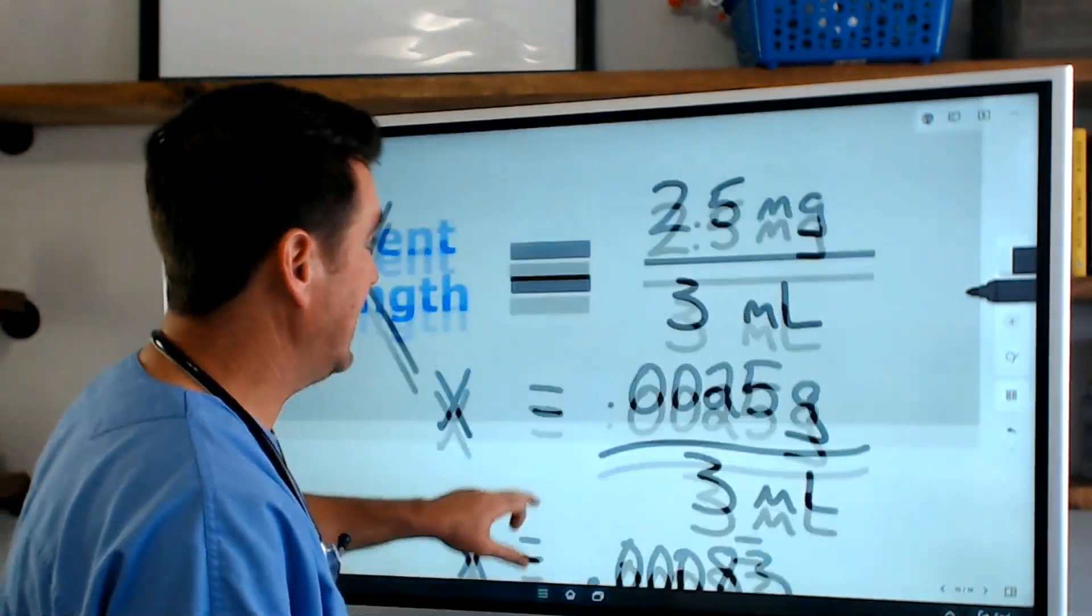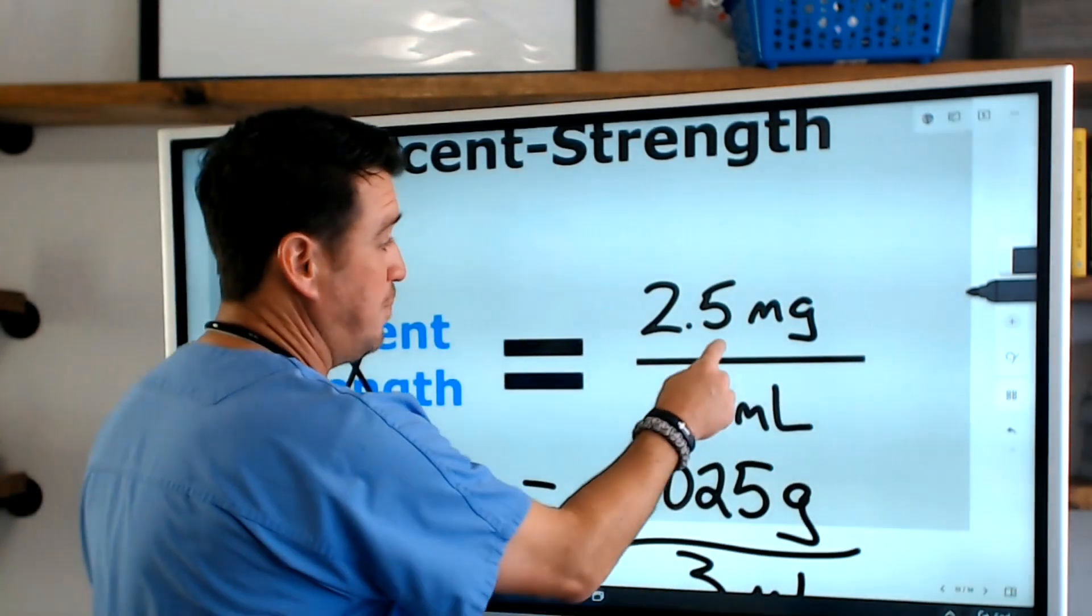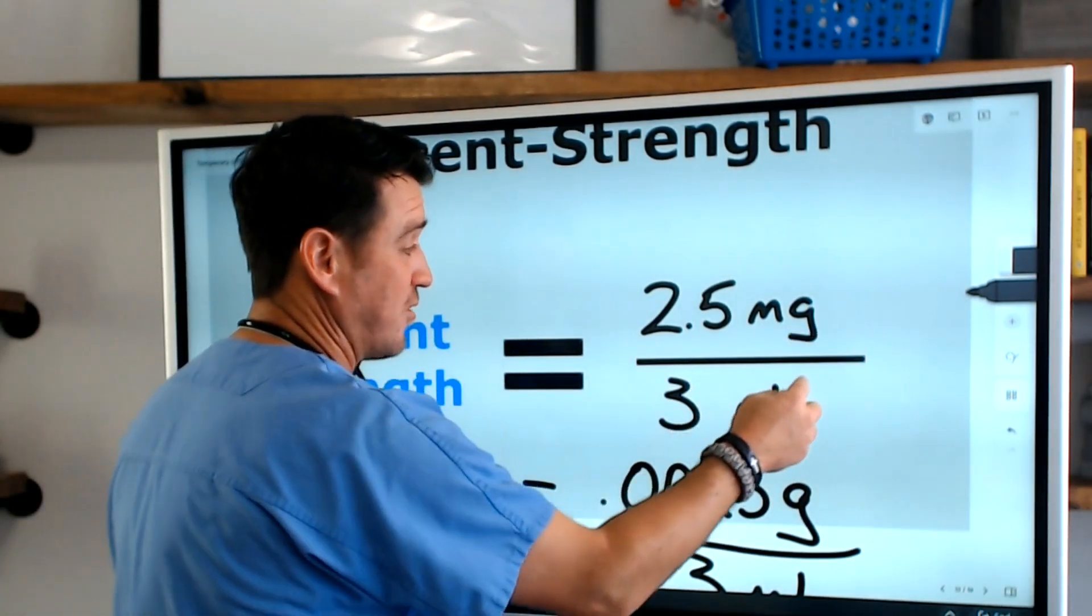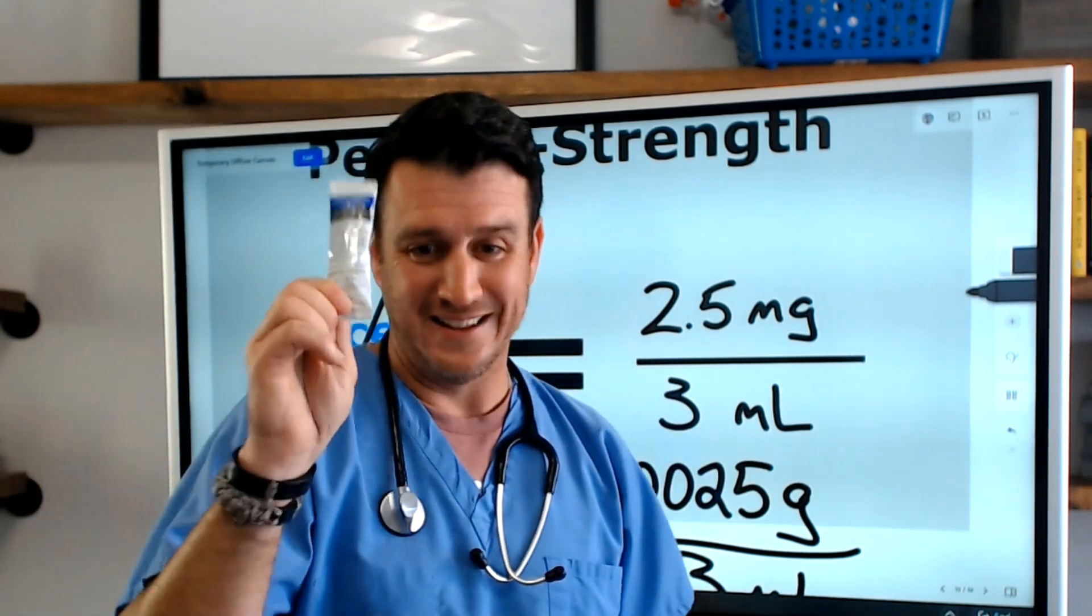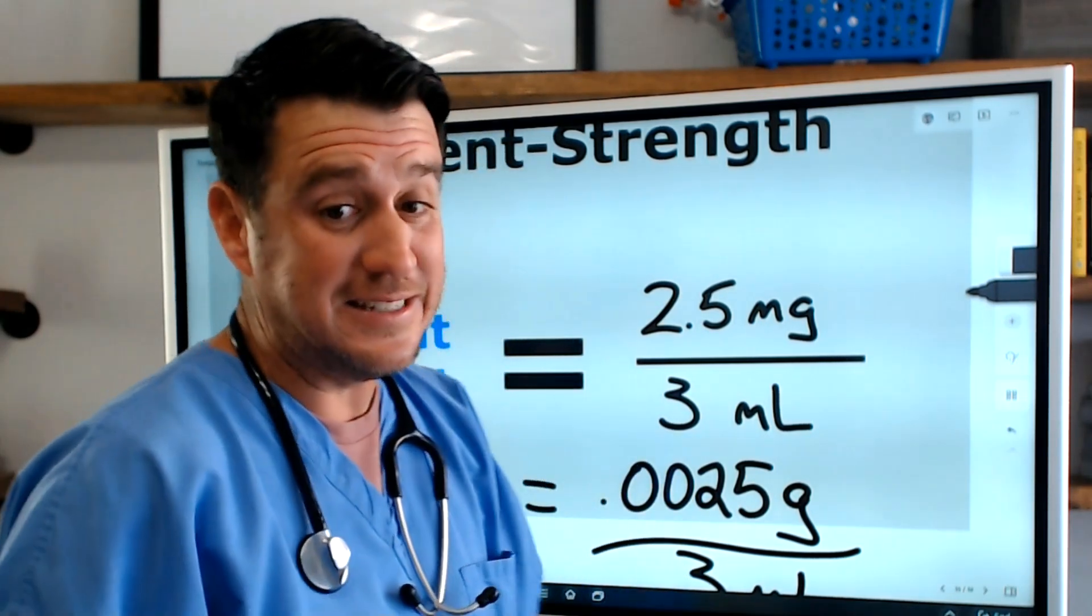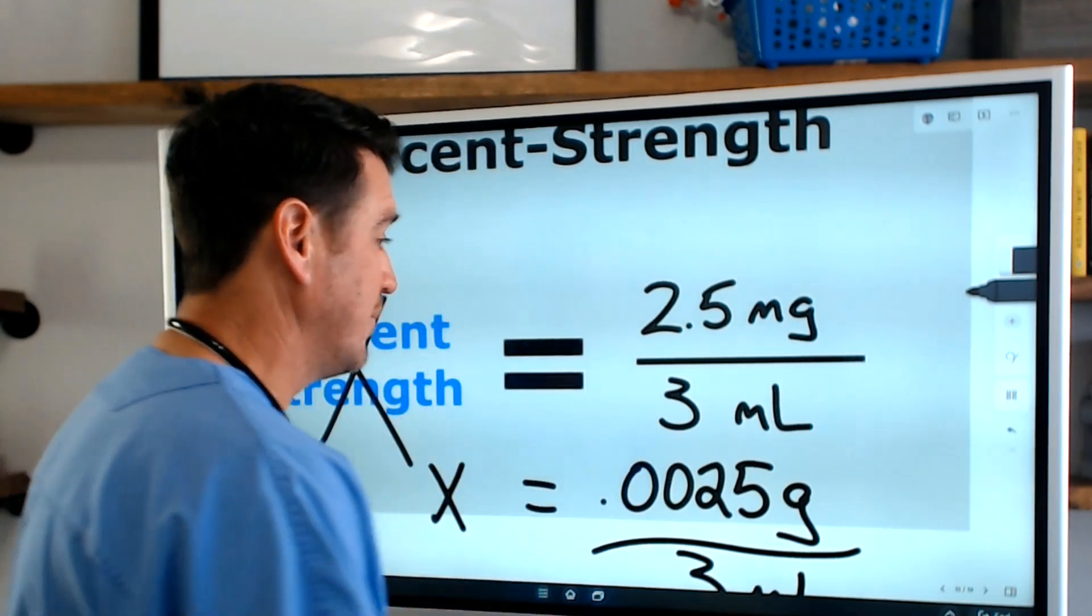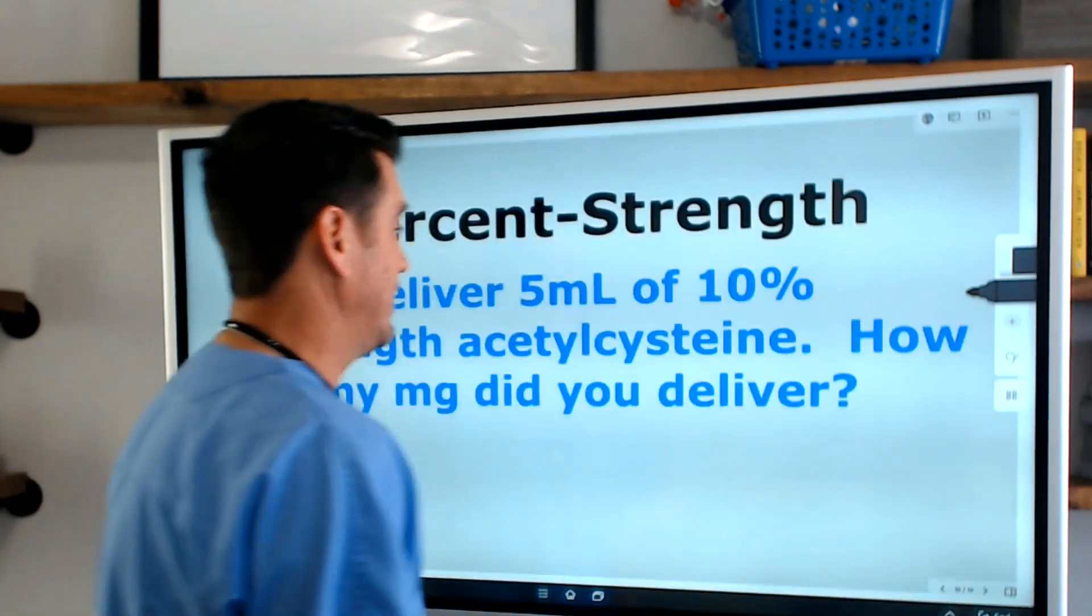Why? Because it is 2.5 milligrams of albuterol in a three milliliter solution. That's what that is and that's what it means. You're working with this all the time; we just don't always recognize it. Let's look at another question.